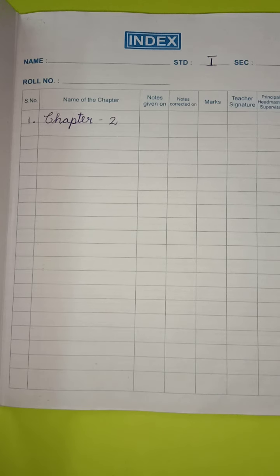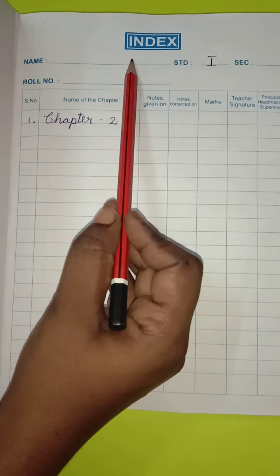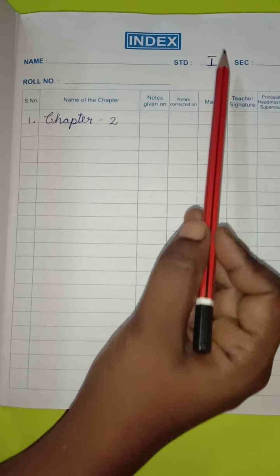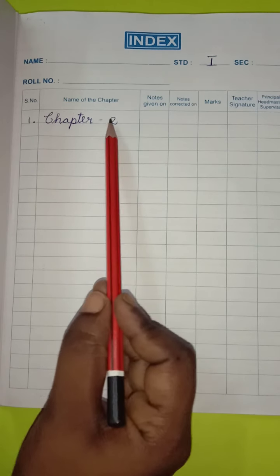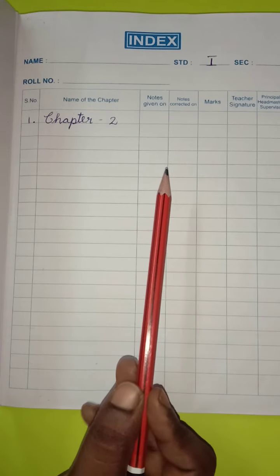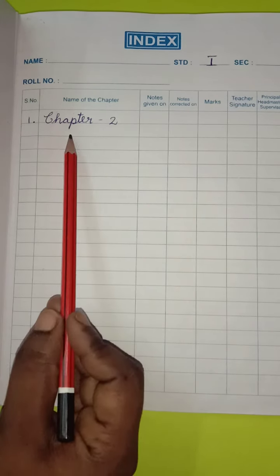Children, everyone take the content page. Then write your name here. Then write a standard as first. Then come to serial number 1, write Chapter 2. We have 13 chapters. Today's class we are going to write Chapter 2.